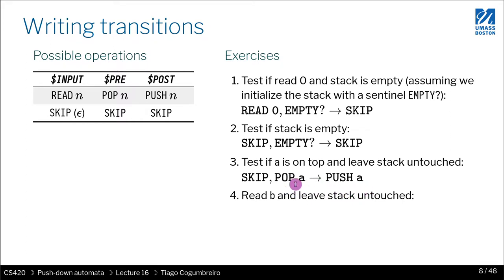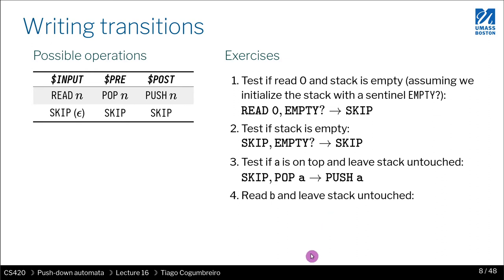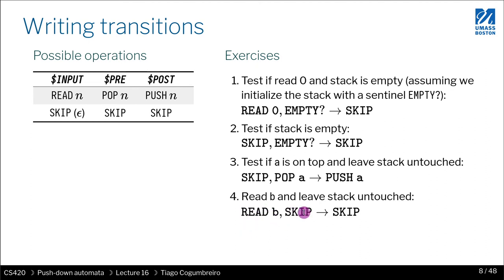If you just want to check if there's any element on top and you don't really care which one, then you would have to write one edge for every character in the stack alphabet. Now, what if you just want to read B and you don't want to touch the stack at all? Hit pause and try. The way you do that is by reading B and then doing skip on both the pop and push operations.